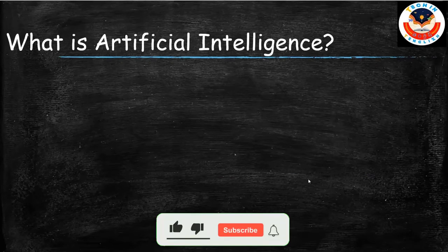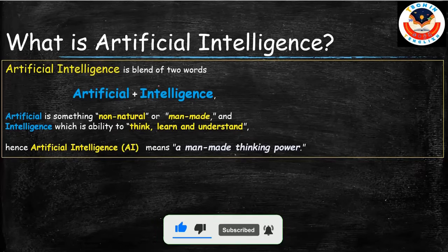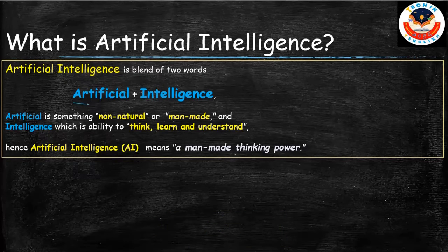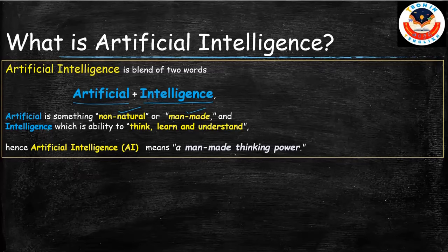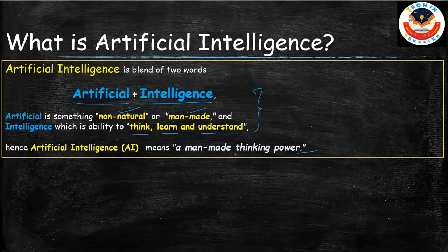So what is artificial intelligence? We know that artificial intelligence is a blend of two words: 'artificial' and 'intelligence.' Artificial is something that is non-natural — it is man-made. Intelligence is the ability to think, learn, and understand. Combining these, we can conclude that artificial intelligence is a man-made thinking power, or man-made learning or understanding ability.